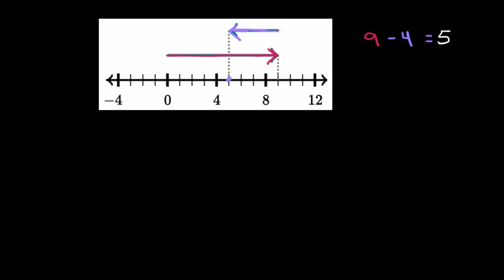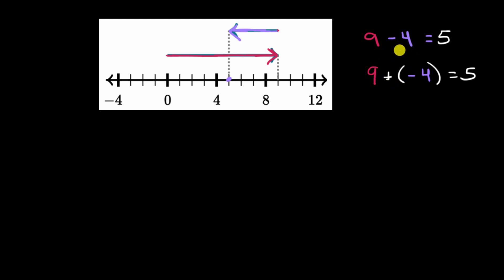But what's another way? We could start with the nine and ask: is there anything we could add to nine to get the same result? We know that when we add negative numbers, we move that many units to the left. So you could view this purple arrow as not subtracting a positive four, but instead as adding a negative four. So subtracting a positive number is the same thing as adding the opposite of it.